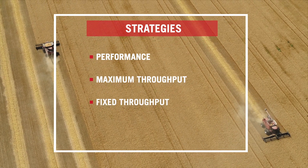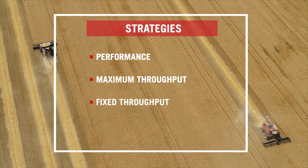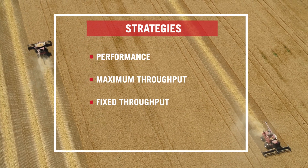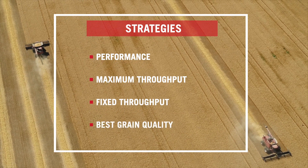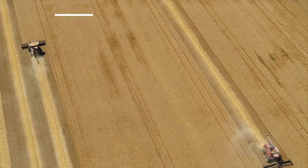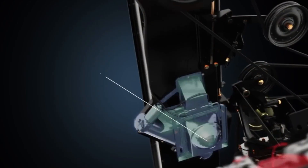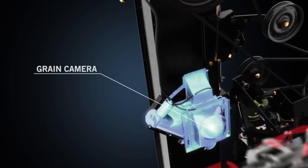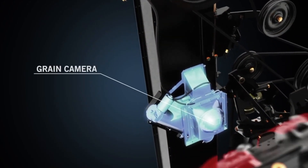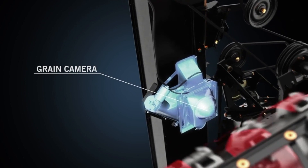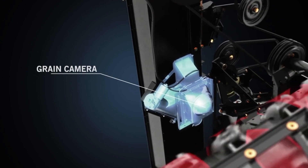Now that Harvest Command is active, a fourth strategy is available: grain quality. Since Harvest Command is utilizing a camera, we can now see the quality of the grain and material other than grain going into the tank.